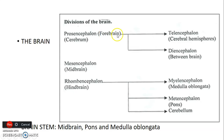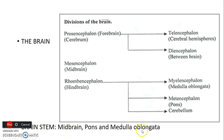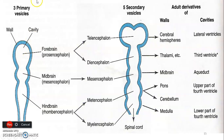The primary vesicles include the prosencephalon, which is the forebrain, forming the telencephalon that gives the cerebral hemispheres and the diencephalon. The mesencephalon is another primary vesicle giving the midbrain, while the rhombencephalon gives the hindbrain derivatives, divided into the myelencephalon that gives the medulla oblongata and the metencephalon that gives the pons and cerebellum. The brain stem is formed by the midbrain, pons, and medulla oblongata. There are three primary vesicles: the prosencephalon, mesencephalon, and rhombencephalon.